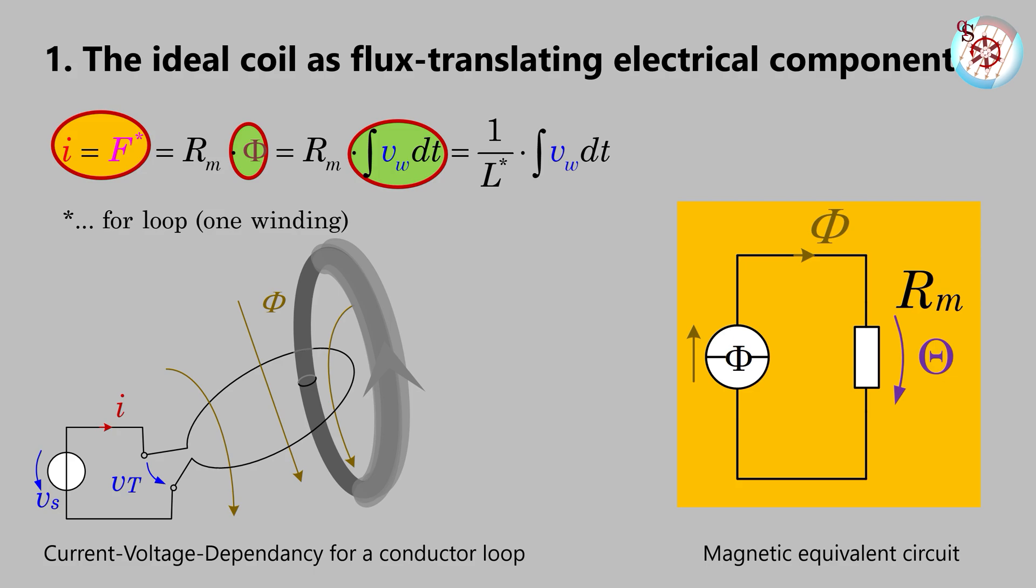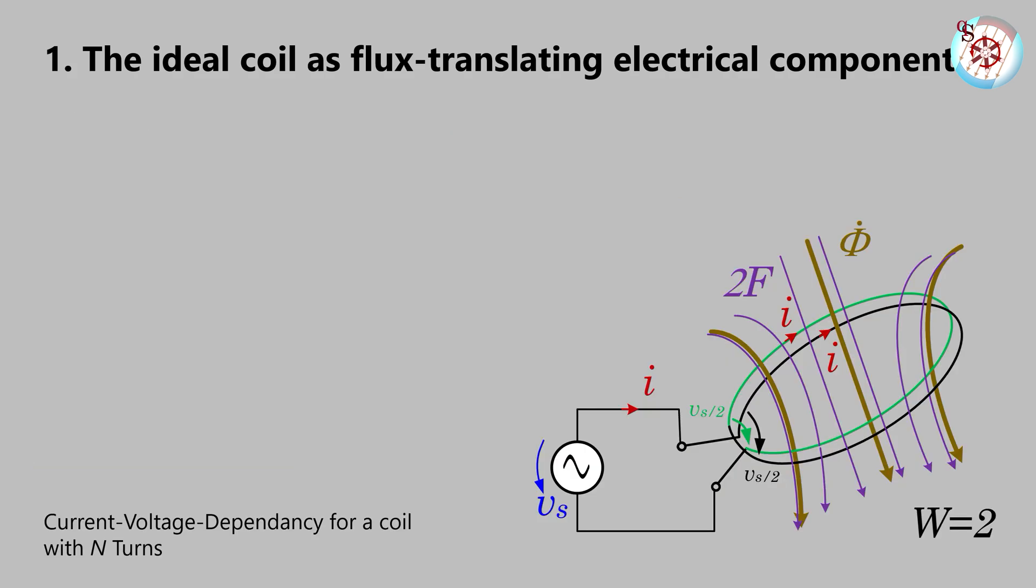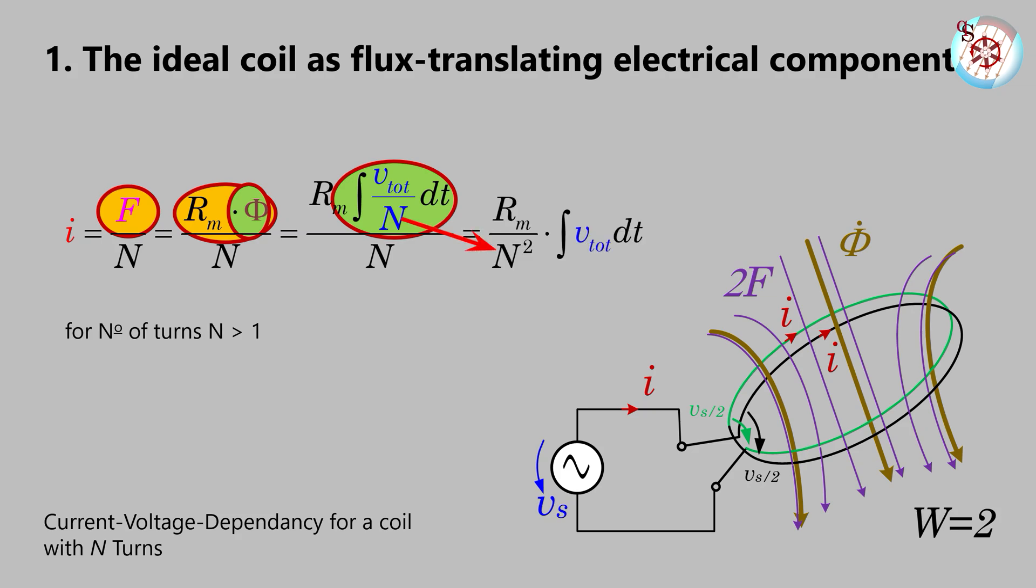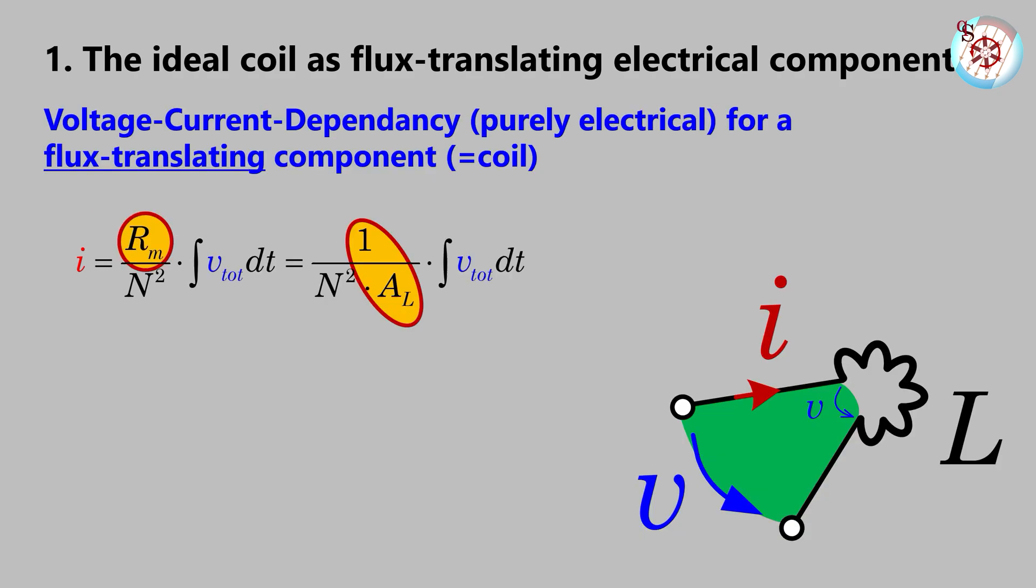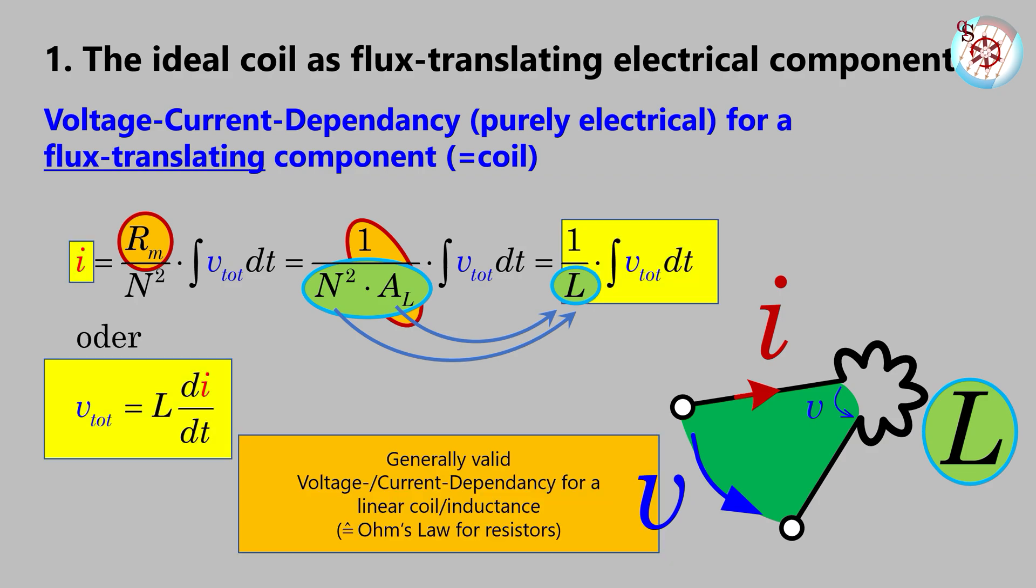It's getting even more interesting when there is more than one turn. The current is now defined as MMF divided by the number of wire turns. Still, the MMF is reluctance times flux. Now the flux is determined as the integral of the voltage per turn. The number of turns is now multiplied in the denominator. Now that we have the total voltage in the integral, we replace the reluctance Rm with its reciprocal to get one divided by AL. The square of the number of turns multiplied by AL is the inductance, and there we go—this is the generally valid voltage-current dependency of inductances without considering the magnetic field.